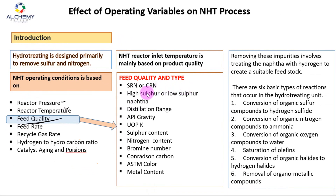Feed quality basically refers to whether we are going to process SRN or CRN. SRN is straight run naphtha that we get from the CDV column as the top product. CRN is cracked run naphtha that we get from the FCC unit. Whether you process SRN or CRN, the NHT operating conditions would be different.